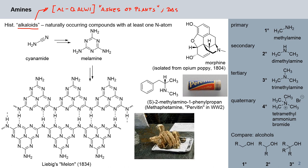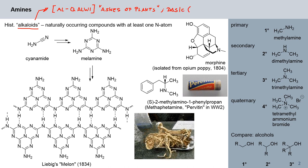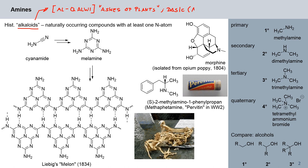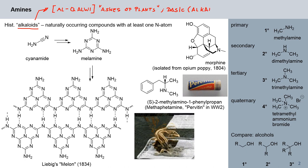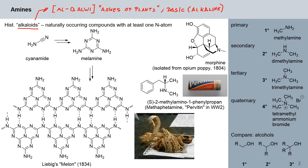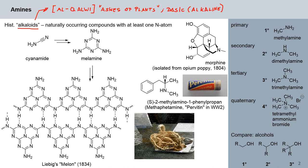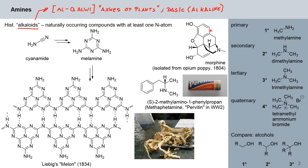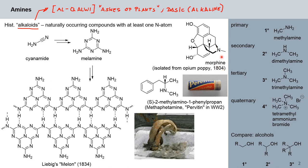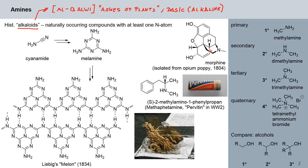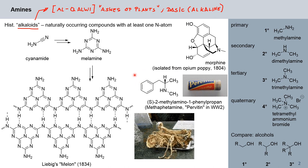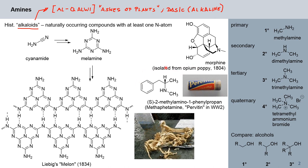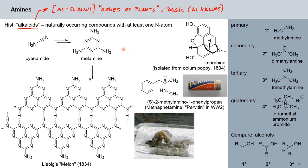These alkaloids are essentially naturally occurring compounds with at least one nitrogen atom. As I mentioned, naturally occurring compounds with at least one nitrogen atom — like, for example, morphine, which was isolated from opium poppy in 1804, where we see the amine functionality. Amines are indeed very important in biological processes, and synthetic psychoactive or pharmaceutically active compounds usually contain some form of amines.